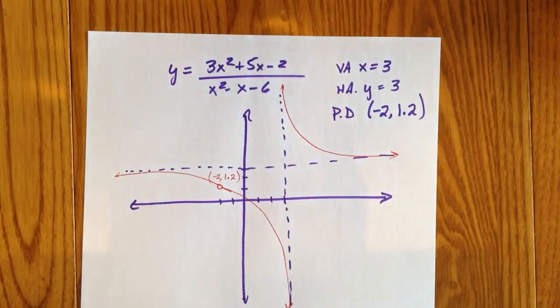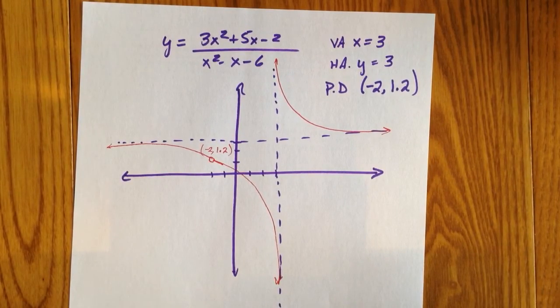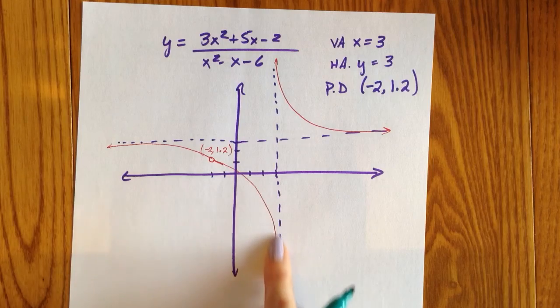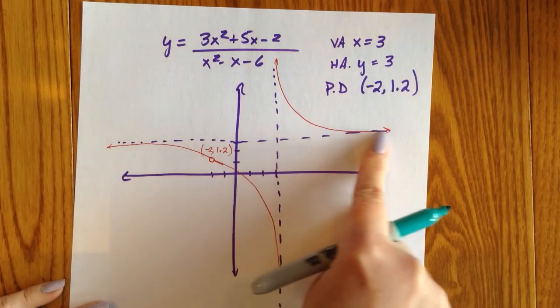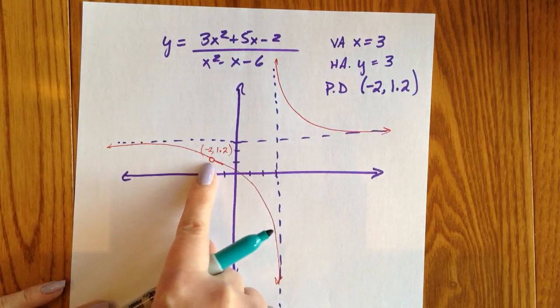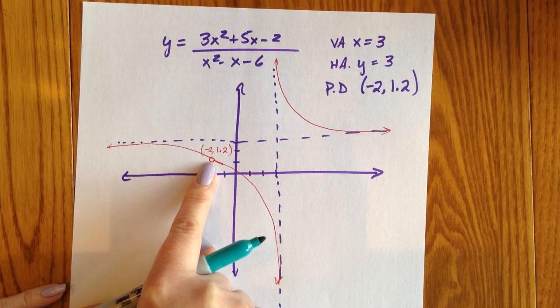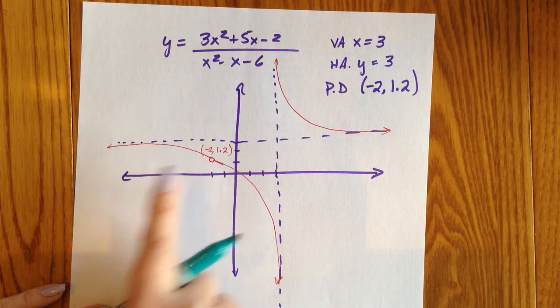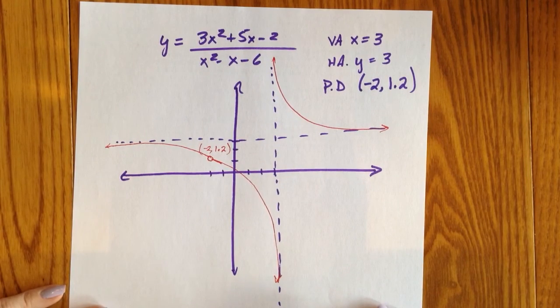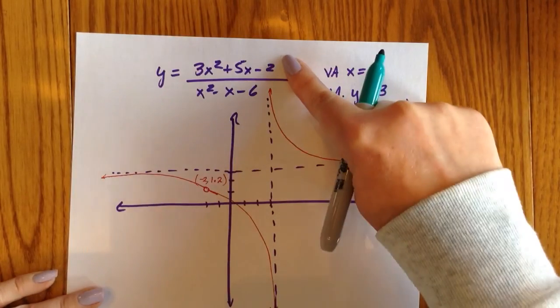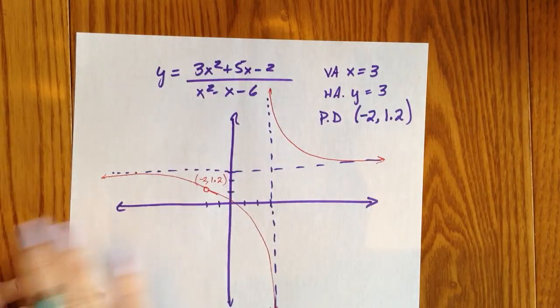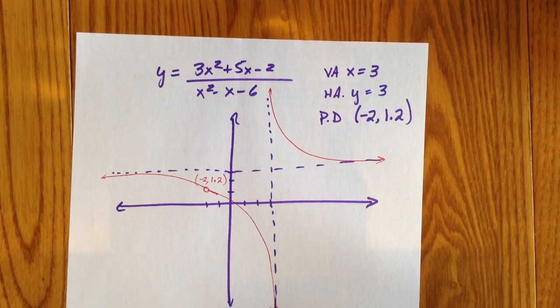These three facts allow me to sketch our curve. Vertical asymptote at x equals three, horizontal asymptote at y equals three, and a hole in the graph at negative two, 1.2. You should verify all of this information with your graphing calculator by typing this into your y equals, doing the appropriate tracing, and look at the graph. That's a lot to take in. Perhaps you should watch the video again.